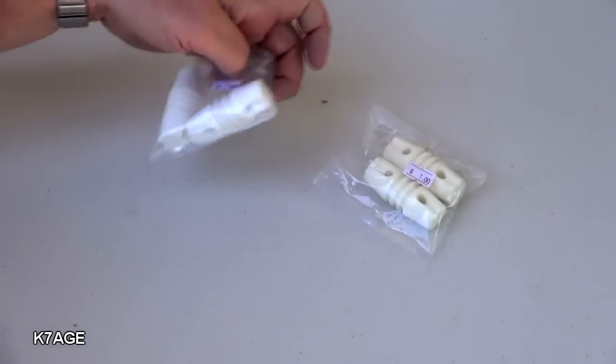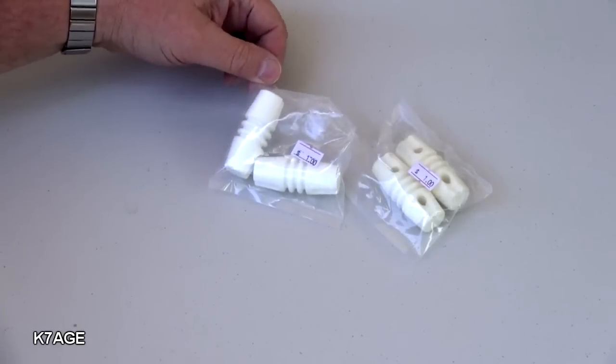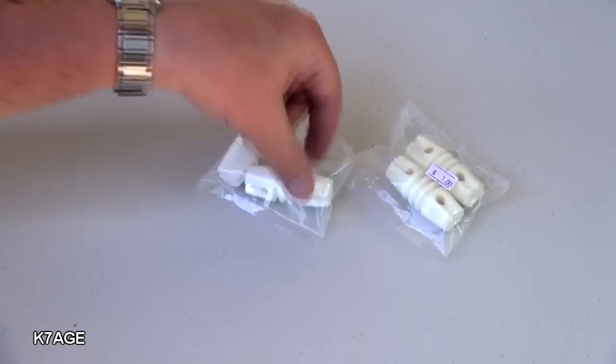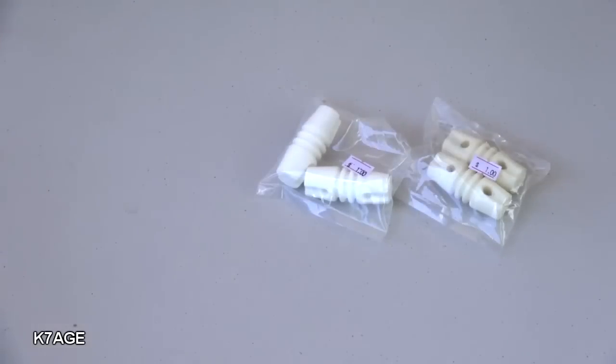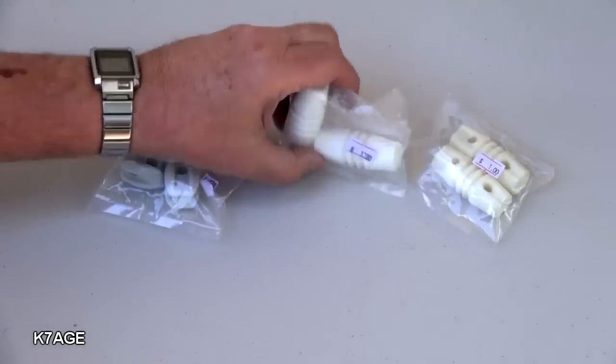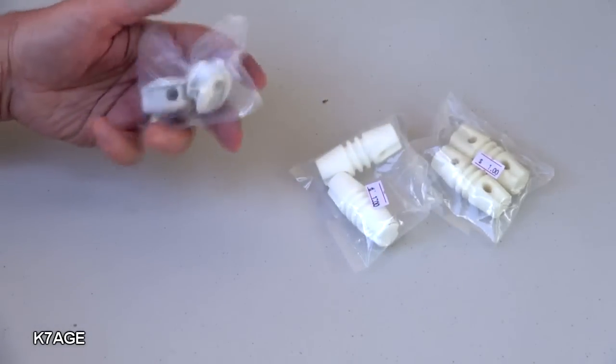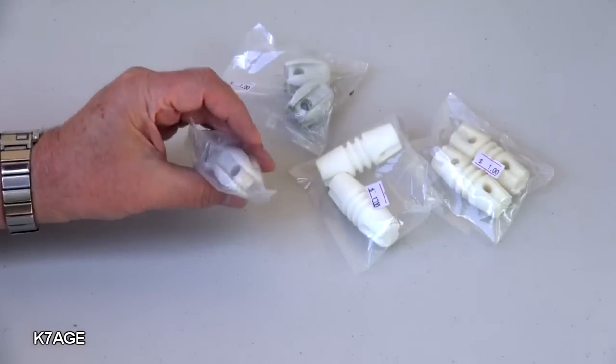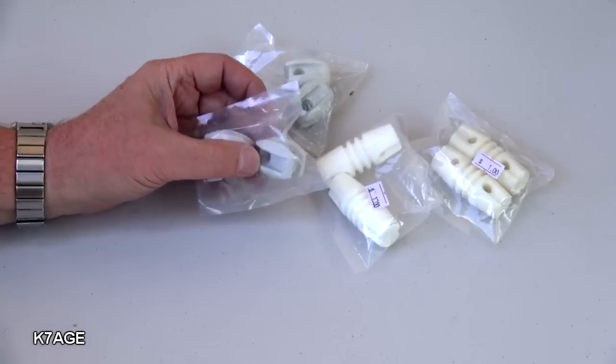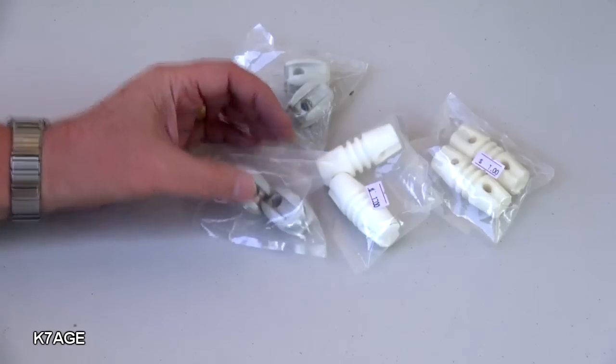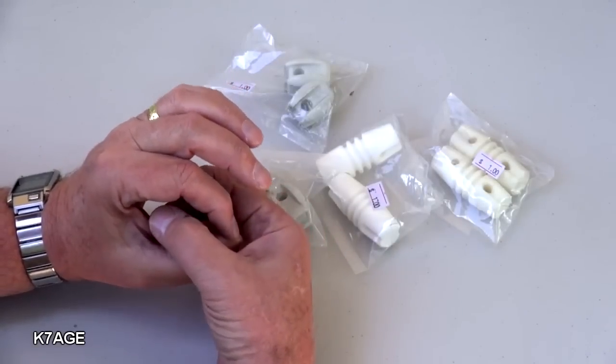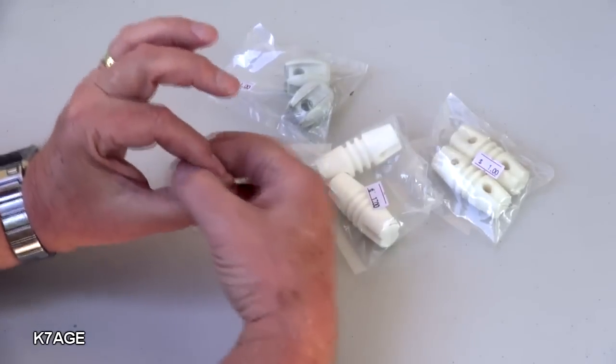So I was at a hamfest swap the other day and I picked up some parts to build antennas, dipoles. I got some insulators for the end. These are the type that the wire would go through on one side and your rope on the other. I also picked up some of these. They were two for a buck. And these are the egg style. So the way these work is that the wire goes through one way and the rope goes through the other. But they don't touch, but if the insulator breaks it'll still hold.